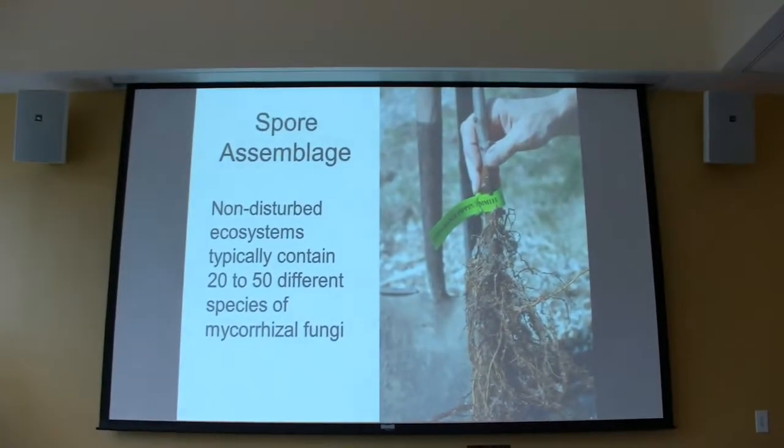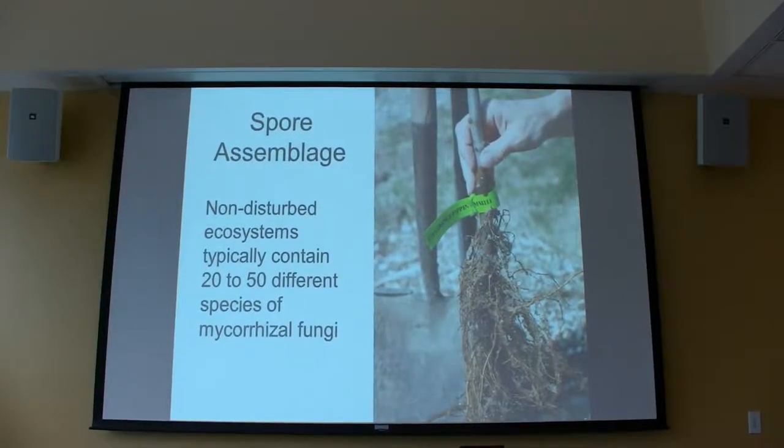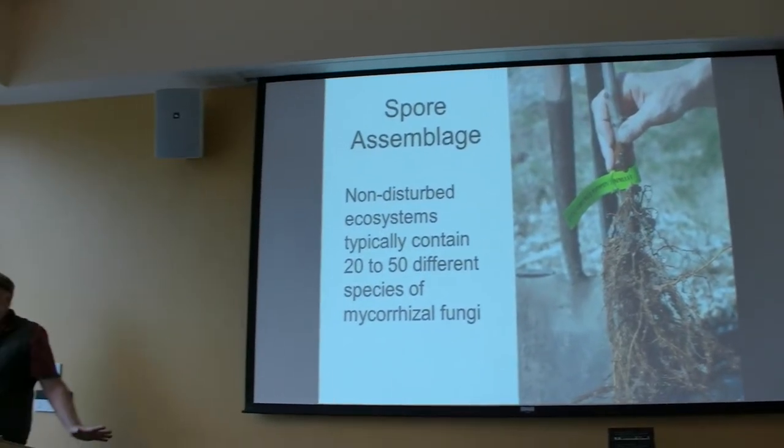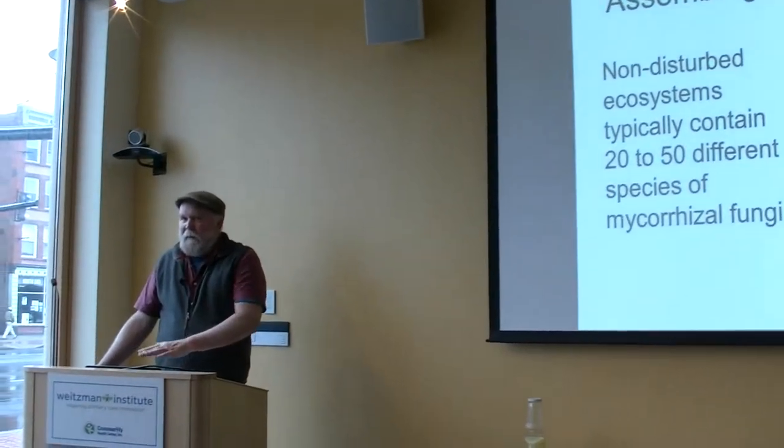In any healthy ecosystem, there are 20 to 50 different species of fungi at play. If we get into the old growth forest, in the endomycorrhizal realm, 20 to 50 different species are affiliated with those plants. Out of 300 species on the earth, as many as 50 are represented in any one place, which starts to tell you that there's a need for diversity of the fungal species.